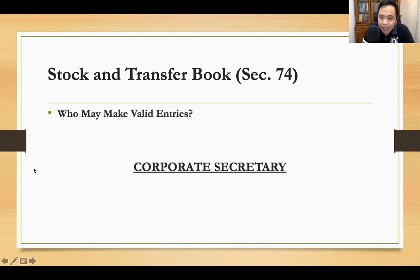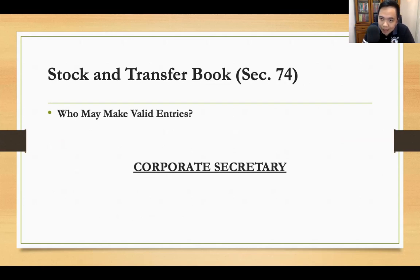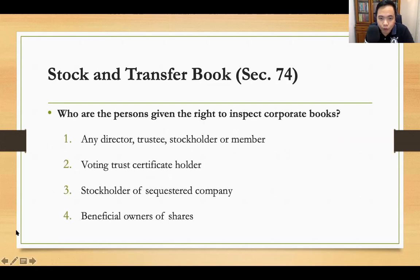Who makes entries in the STB? It is the corporate secretary. The corporate secretary is the one responsible for making entries and keeping the STB under Section 74. As a stockholder, you have the inherent or proprietary rights to inspect the corporate books.